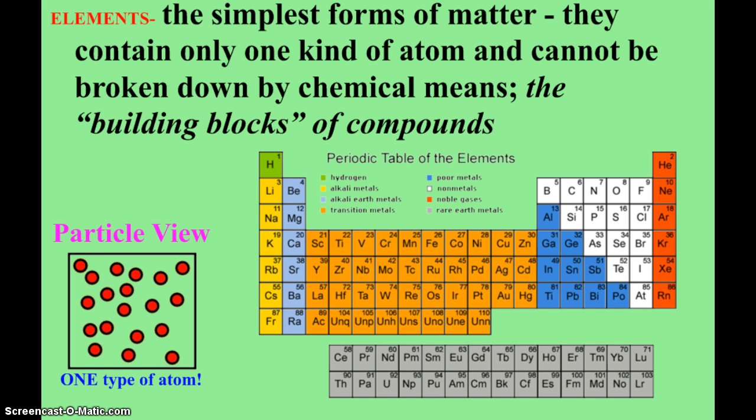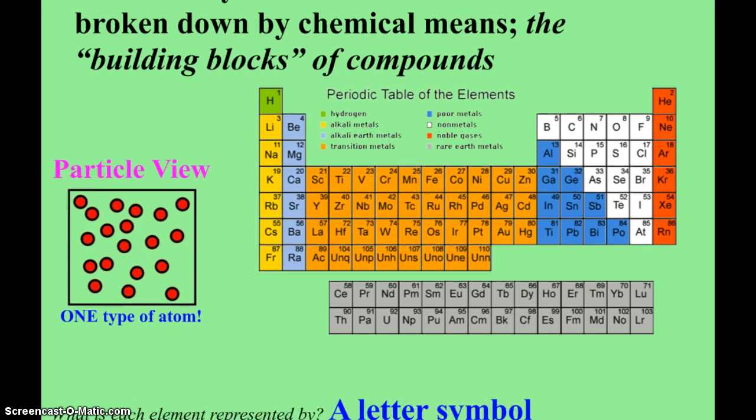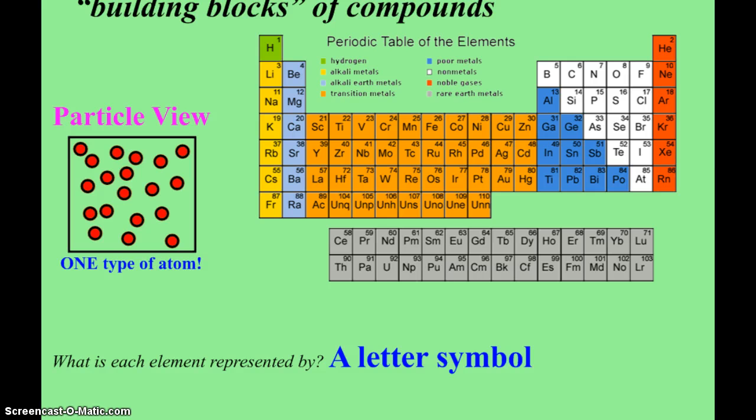Now, with elements, of course, comes the most recognized symbol of chemistry, the periodic table of the elements. And so, I gave you one of those in class, and if you look at them, you'll notice that each element is represented by what? That's what I just showed there, a letter symbol. So, if you look at this periodic table here, you see a bunch of letters.